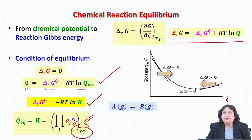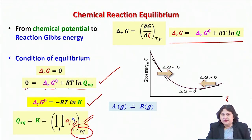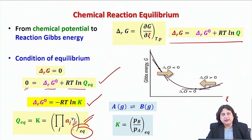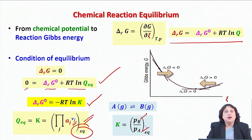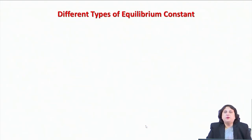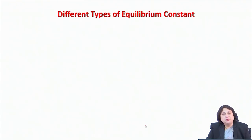Let me take this example again: for a homogeneous gas phase reaction where A goes to B and there is chemical equilibrium between the two species, K equals the partial pressure of B divided by the partial pressure of A measured at equilibrium. Depending on the way you describe the activity that enters the expression for equilibrium constant, you can have many different types of equilibrium constant depending on the application you have in mind.